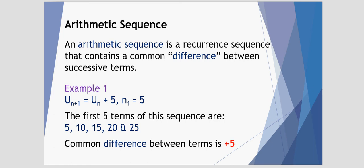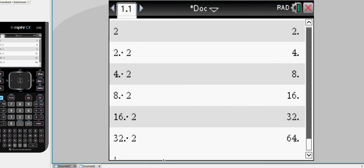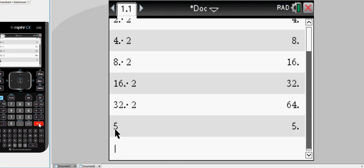So in terms of a calculated sequence, I'm starting with the number 5, entering that in. And then I want to add 5 to that. And if I hit enter repetitively, I'll get my sequence 5, 10, 15, 20, 25.